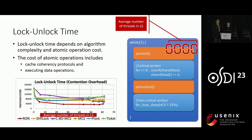Lock-on-lock time depends on algorithm complexity and the cost of atomic operations, including cache coherency protocols and operation execution. Efficient algorithms with lower complexity tend to have shorter lock-on-lock times. Atomic operations incur overhead due to cache coherency protocols and data execution. By carefully considering these factors, we can optimize lock-on-lock times for improved synchronization and shared data access performance.